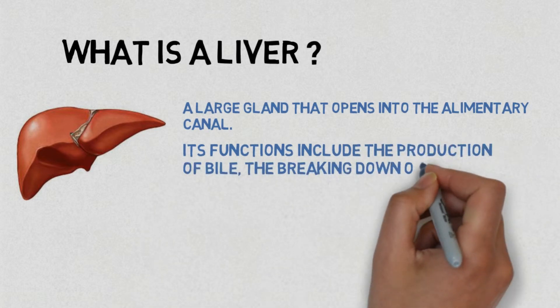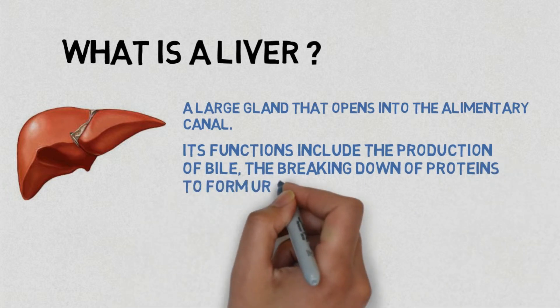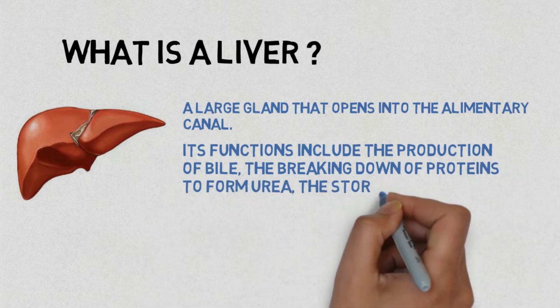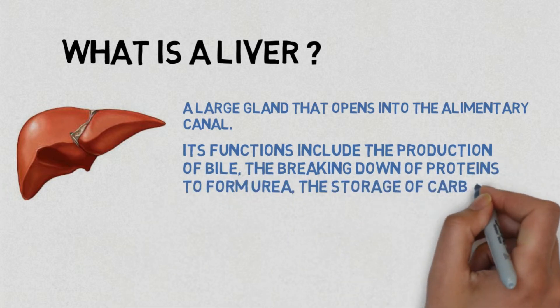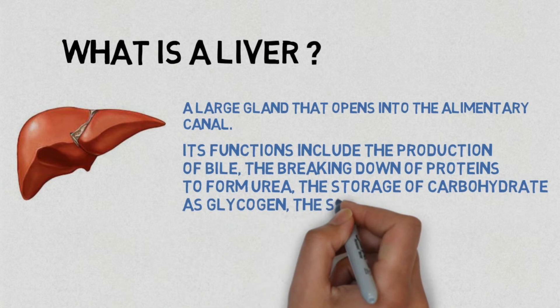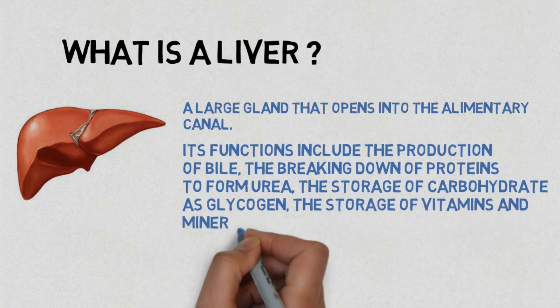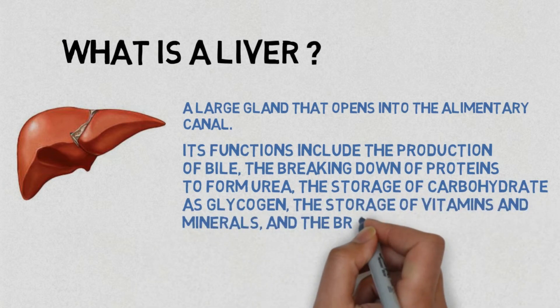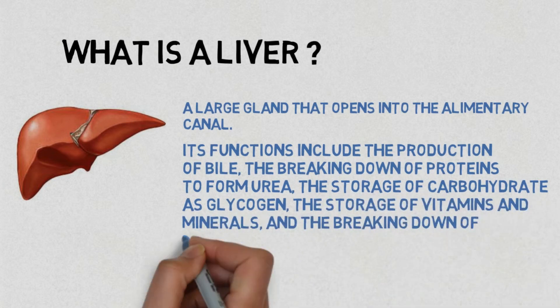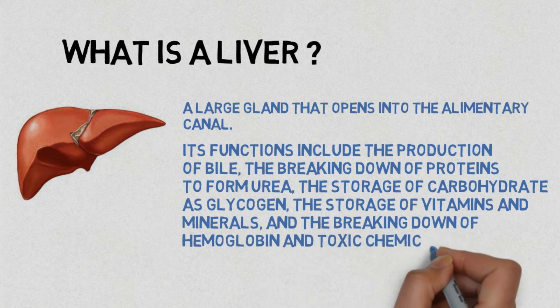The liver is also responsible for the storage of carbohydrate as glycogen, the storage of vitamins and minerals, and the breaking down of hemoglobin and toxic chemical compounds.